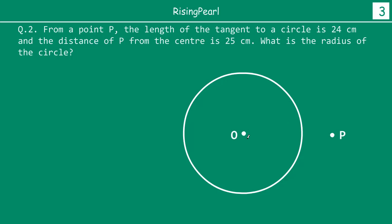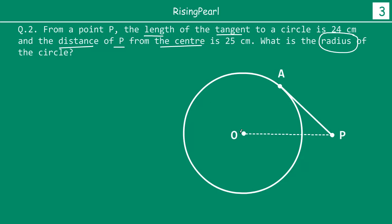We draw a circle with center O and take an external point P. We join P and A because PA is the tangent — the length of the tangent is given as 24. Also given is the distance of this external point from the center, so we join the center O and the external point P. We have to find the radius, so we join O and A.